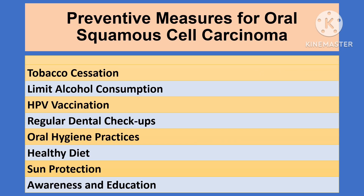Prevention plays a crucial role in reducing the incidence of oral cancer. First and foremost, tobacco cessation is vital — stopping tobacco use in all forms, whether smoking, chewing, or using snuff, significantly reduces cancer risk. Limiting alcohol consumption is also important, as high alcohol intake is linked to increased oral cancer risk, especially when combined with tobacco use. Another effective preventive measure is HPV vaccination, which can protect against infections linked to oral squamous cell carcinoma; this is particularly important for adolescents and young adults.